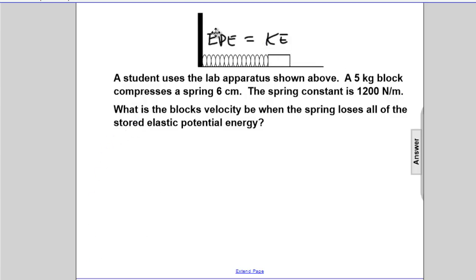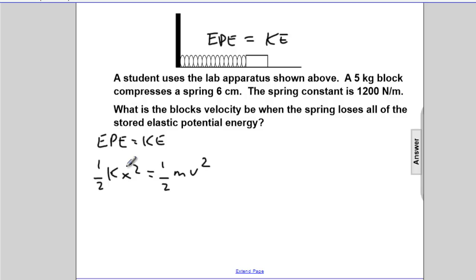So we will write that the EPE lost is the KE gained. So the EPE of the spring is one-half kx squared. The KE of the block, after the fact, will be one-half mv squared.